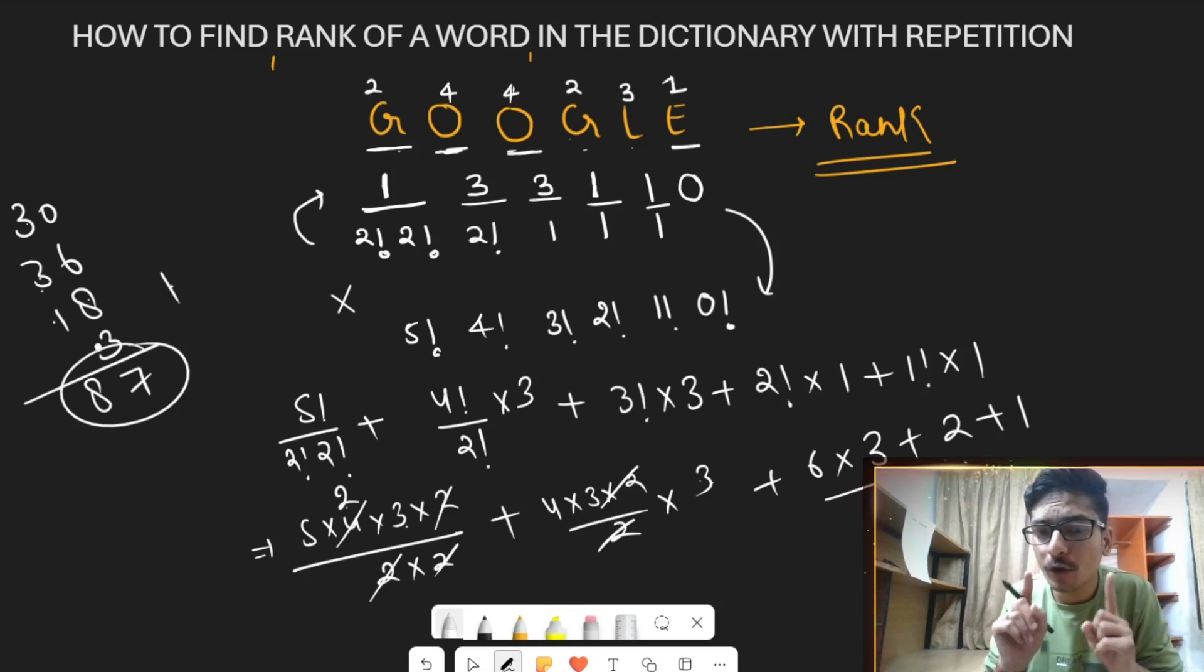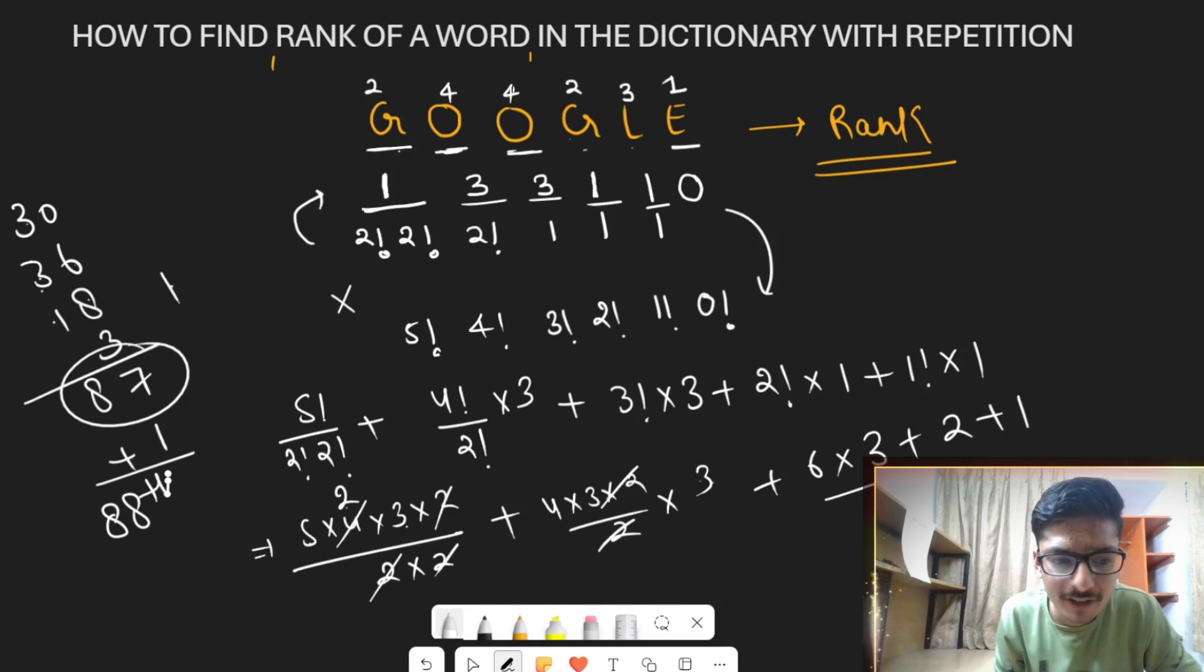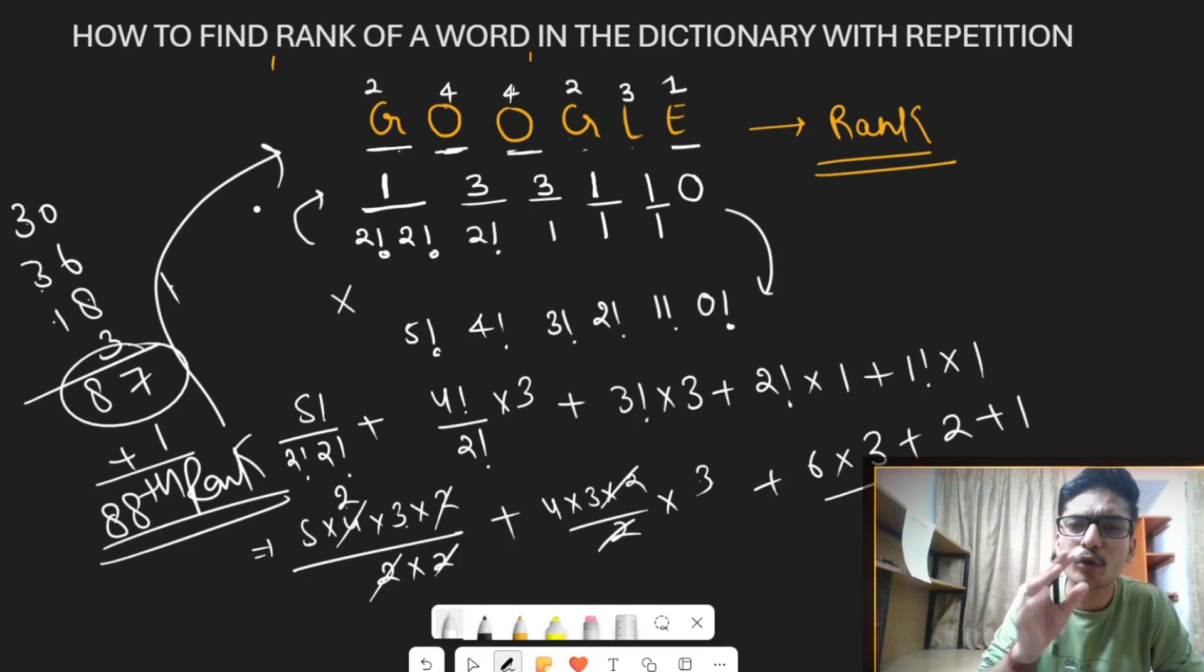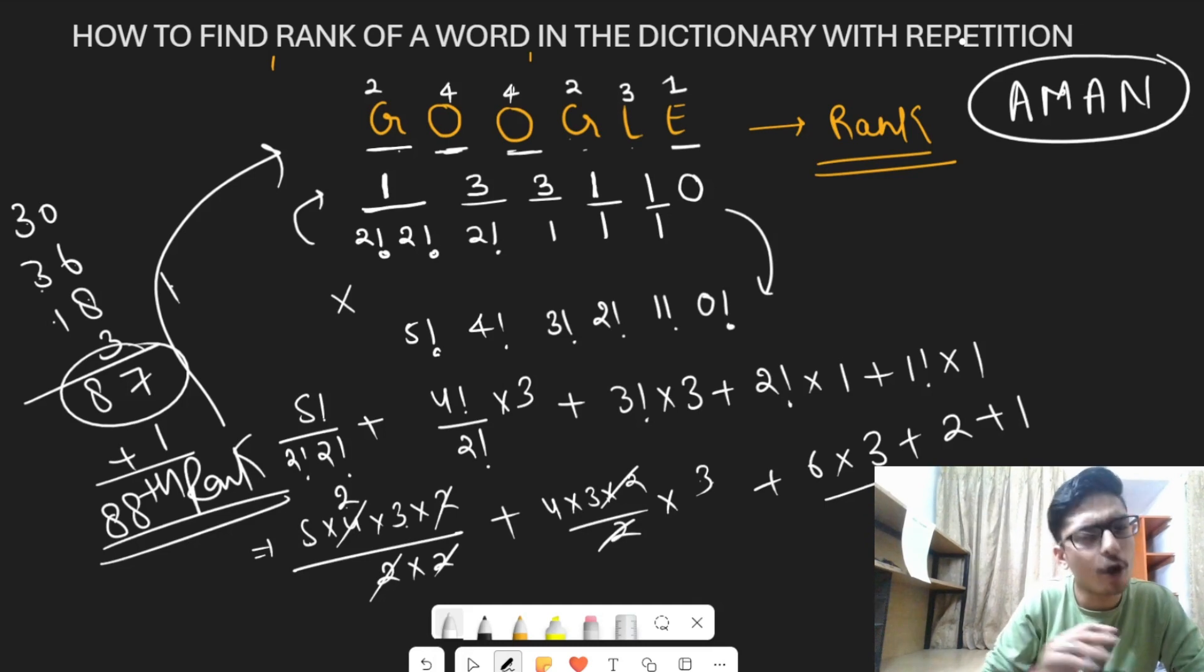I hope you have to find the rank of the word Google, so at the end always you have to add one in order to find the rank of the word Google. So 88th will be the rank of the word Google. I hope you have to find the rank of this word. I hope you have to understand the concept.